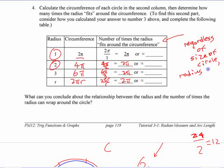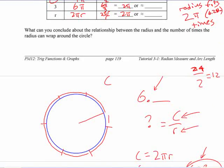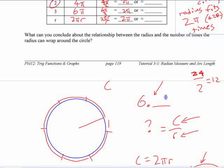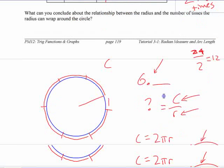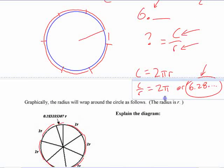The radius fits 2π — in other words, 6.28 — times around the outside. That's the idea you're looking for here. Hopefully you discovered that idea. Now that's the basis of what we're going to use for something called radian measure — using radians, a different unit for measuring angles.